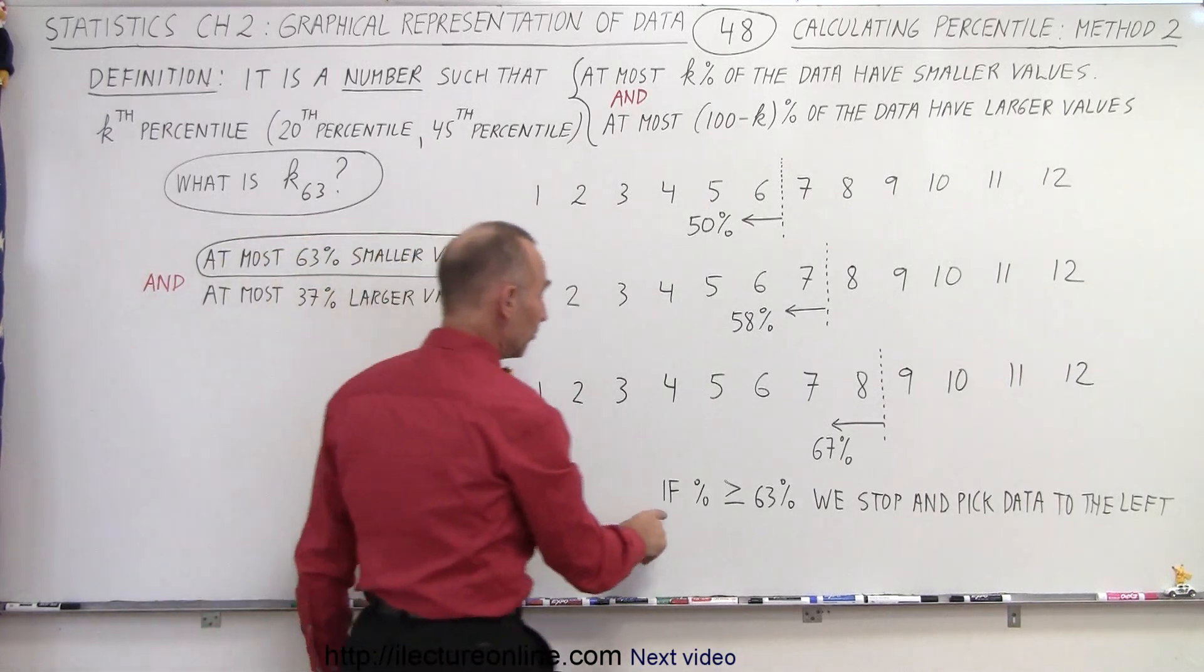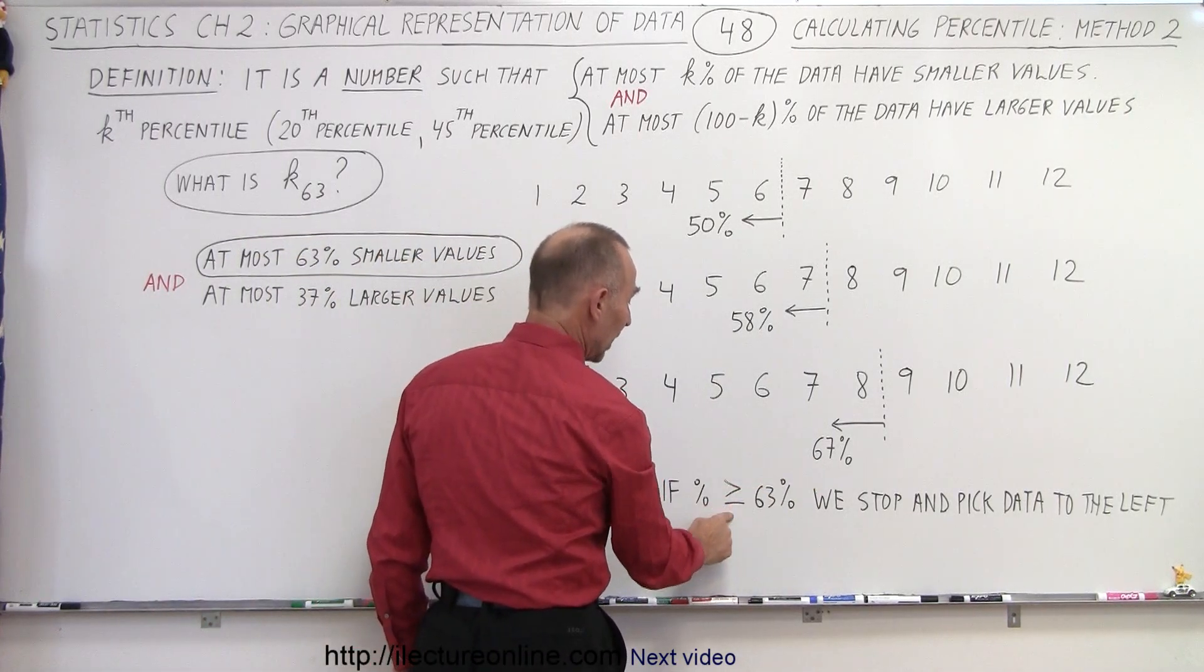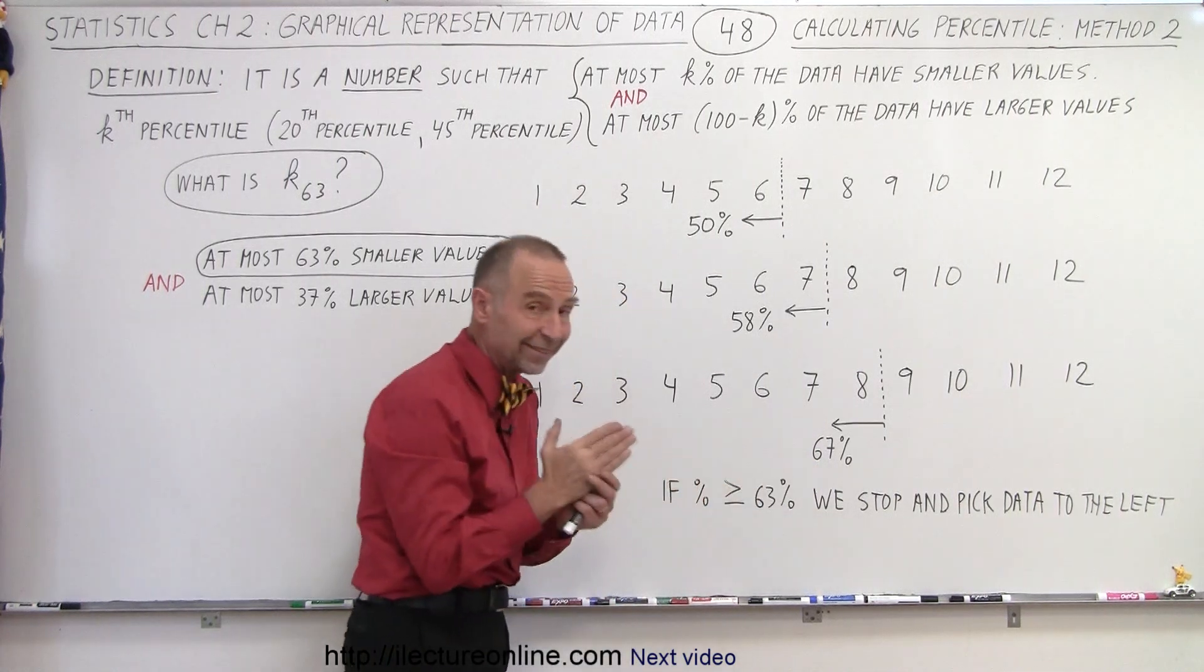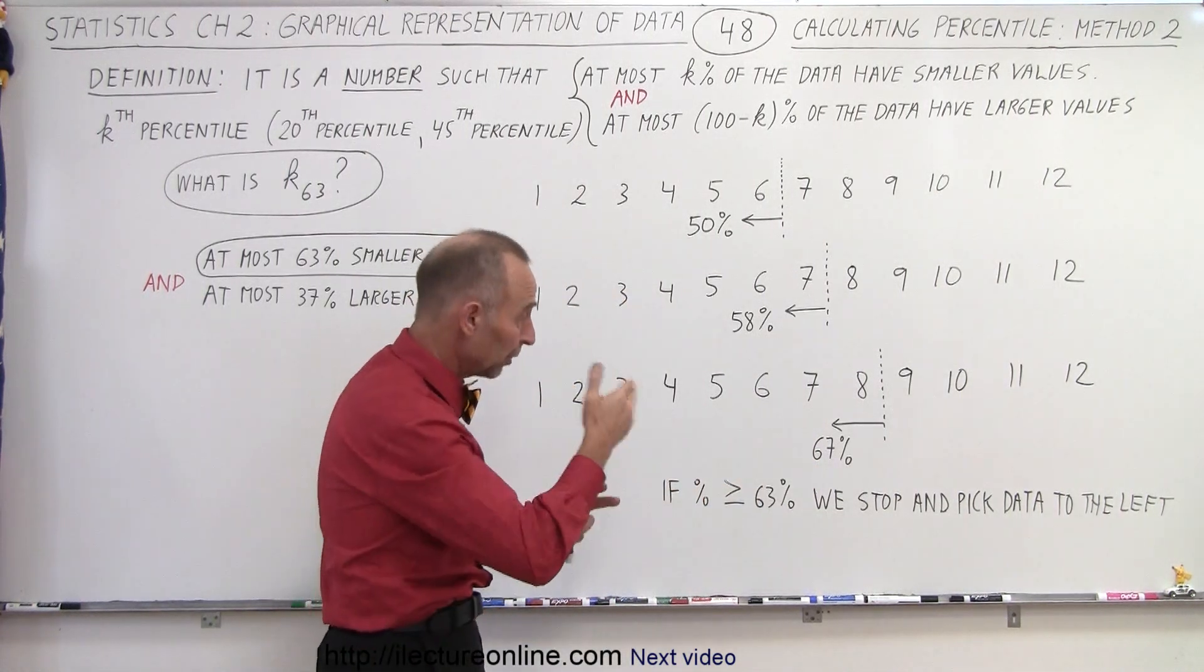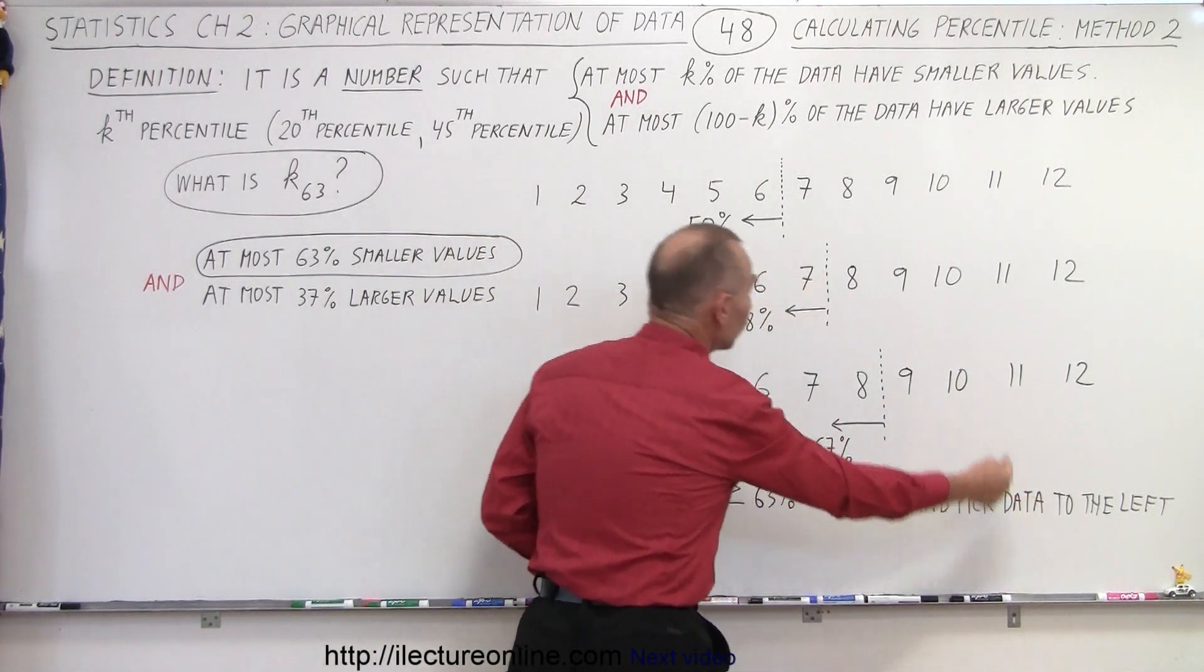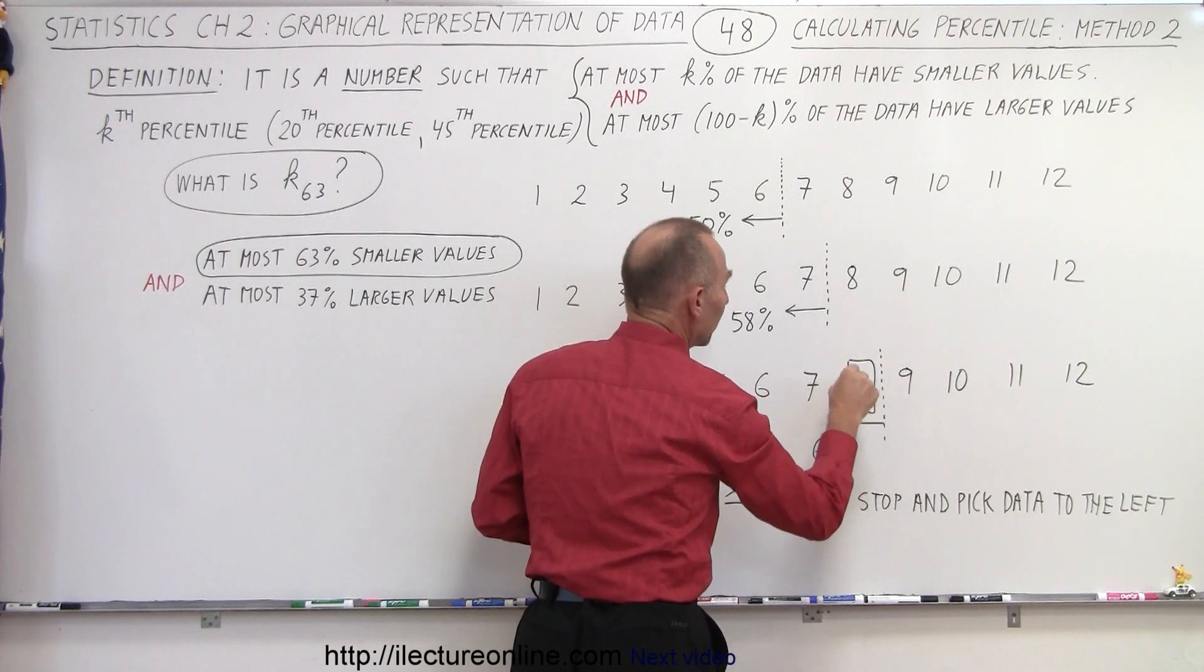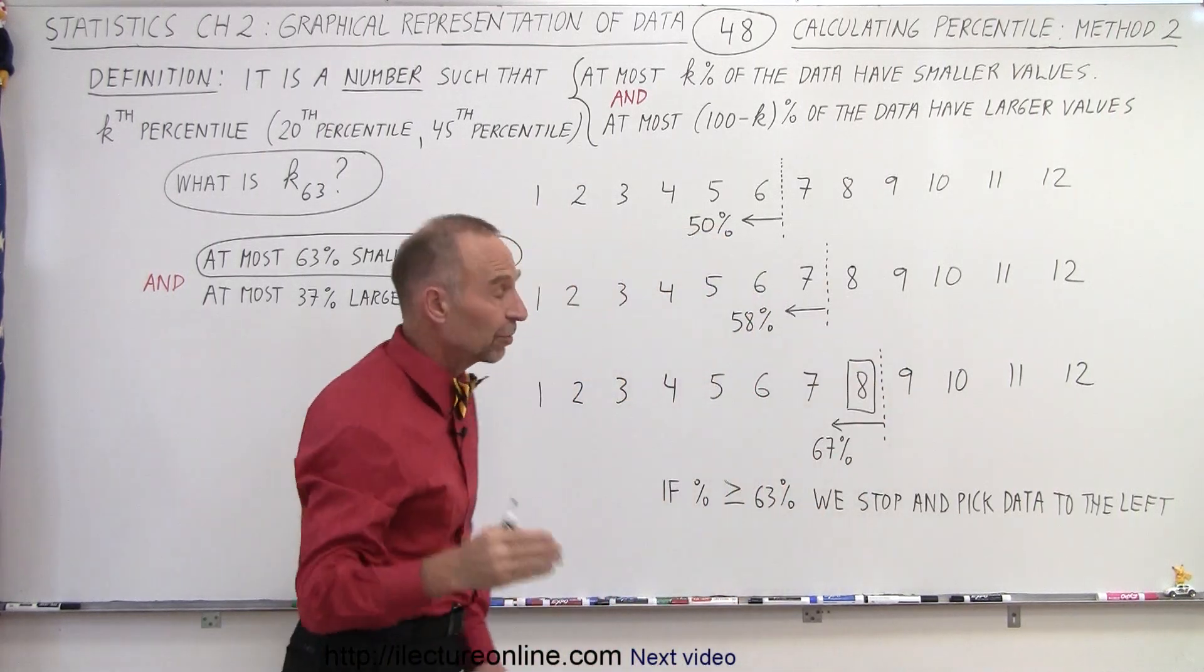So here's the condition. If the percent that we pick is greater than or equal to 63 percent, so it could be that it's exactly equal to, which is again a point at which you stop, and then we pick the data directly to the left. In other words, we pick this number, and this represents the 63rd percentile.